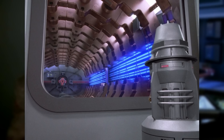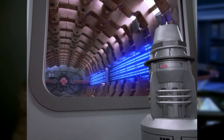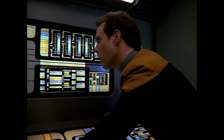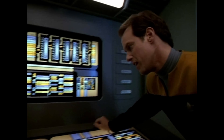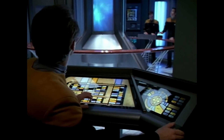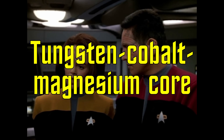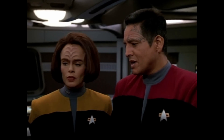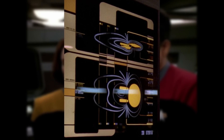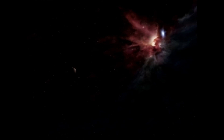These coils are typically composed of a cast of the fictitious metal vertarium-quartonide, a dense alloy of silica-based polymers and crystals, surrounding a tungsten-cobalt-magnesium core. The coils then create a subspace displacement field around a starship, allowing it to travel at warp speed.